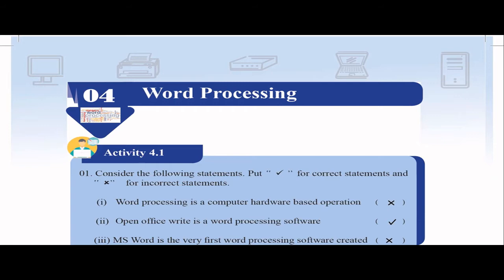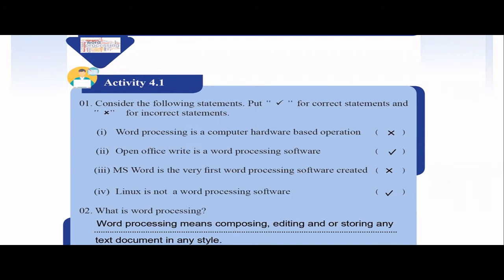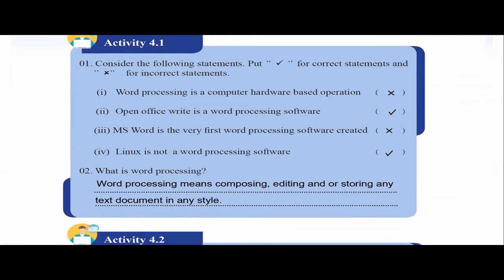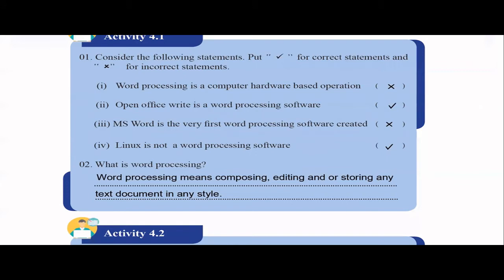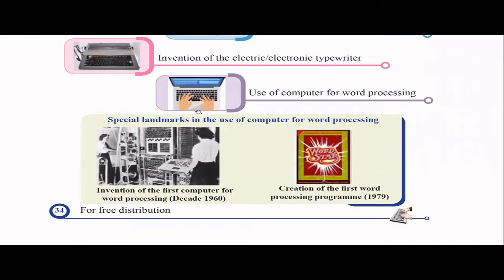Let's start word processing. Activity one: put a tick for correct statements and a cross for incorrect ones. First, word processing is a computer hardware-based operation — that's wrong, because it's a software-related operation. Word processing is a software-related thing. Open Office Writer is a word processing software — yes, that's true. MS Word is the very first word processing software created — that's wrong. If you check your textbook, WordStar was actually the first word processing program, developed in 1979. So that statement is wrong.